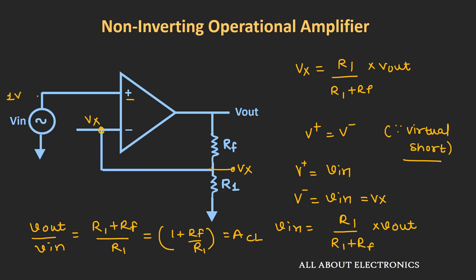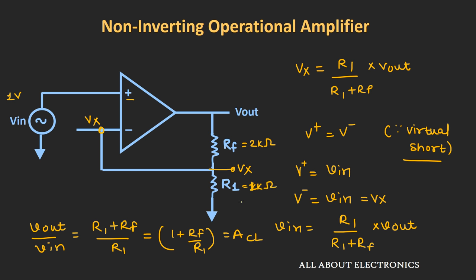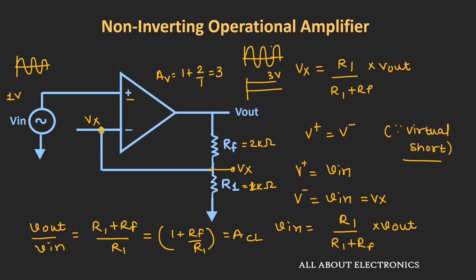For example, if I apply 1V DC at the non-inverting input terminal and take R1 as 1 kΩ and Rf as 2 kΩ, then the gain will be 1 plus 2 divided by 1, which equals 3. So at the output I will get 3V DC. Similarly, if I apply a 1V sinusoidal signal with Rf as 2 kΩ and R1 as 1 kΩ, at the output I will get a 3V amplified AC signal which is in the same phase as the input signal.